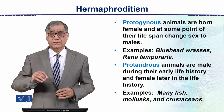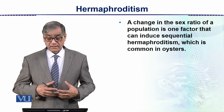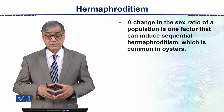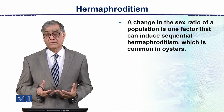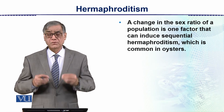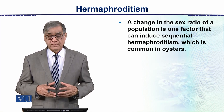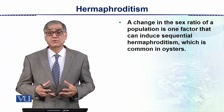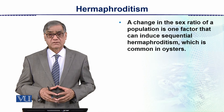A change in the sex of a population is one factor that can induce sequential hermaphroditism, which is common in oysters. Oysters are mollusks, and this condition can be introduced in them. Oysters are also used as food. So this is hermaphroditism, which has two main types.